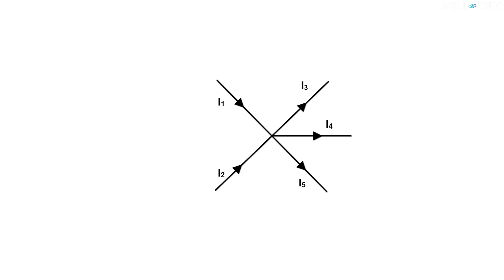Let's take another example. We see here I1 and I2 are entering the system, and I3, I4, and I5 are leaving the system. Applying Kirchhoff's current law, what do you get? Solve it and let us know in the comment section below.